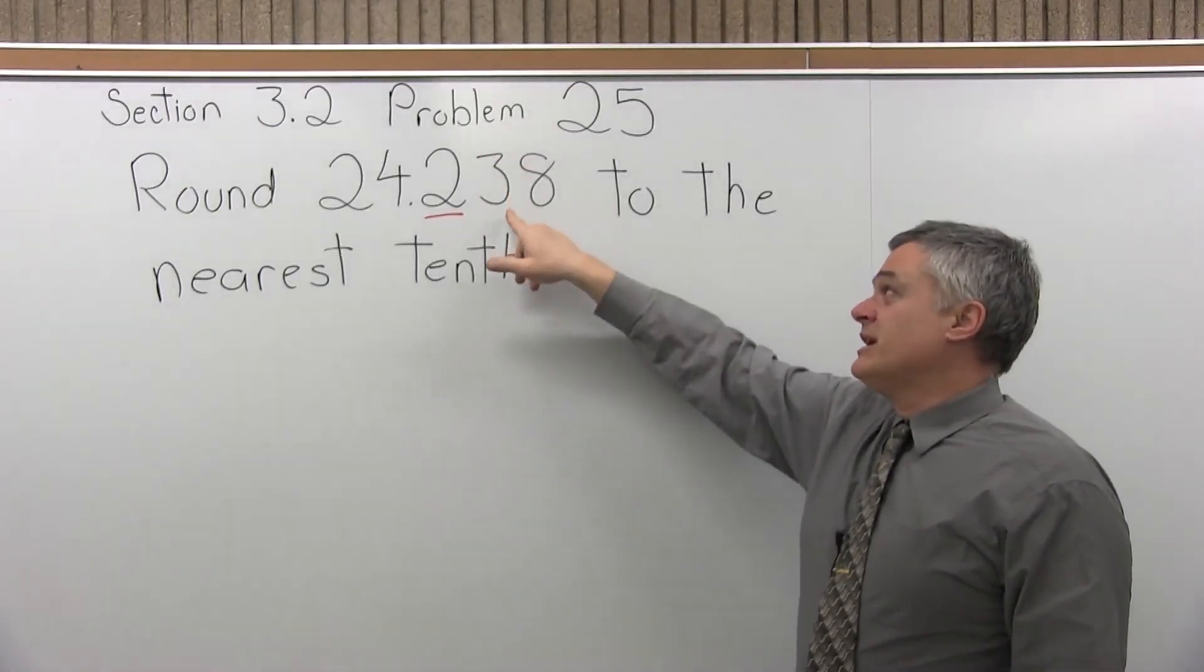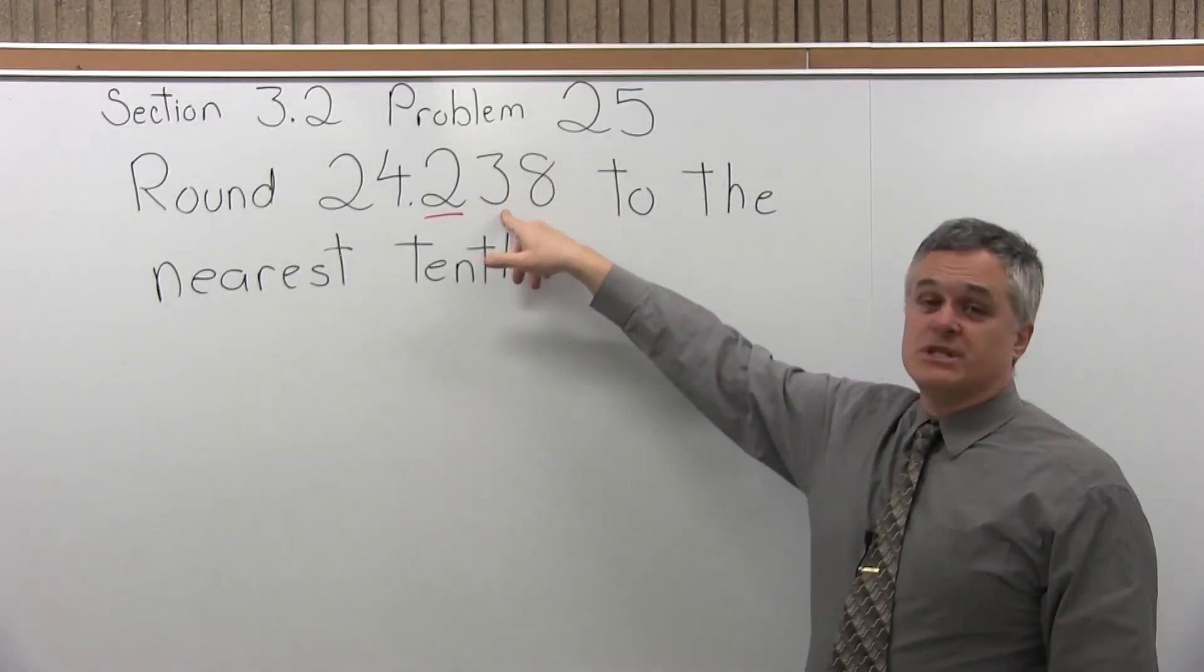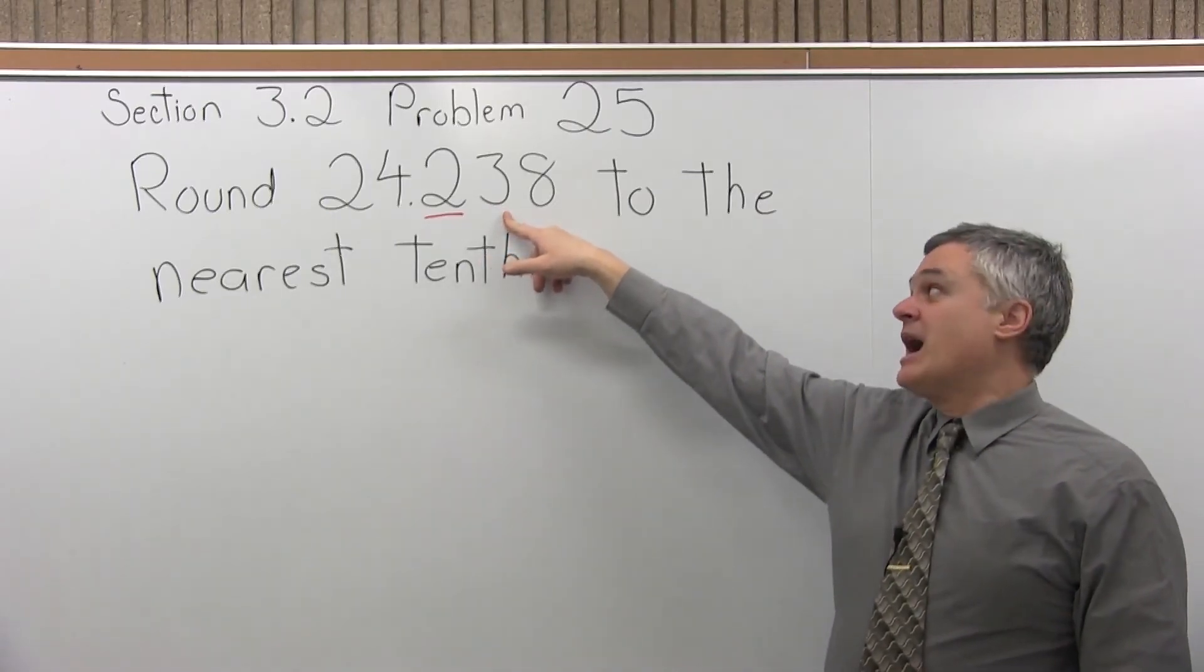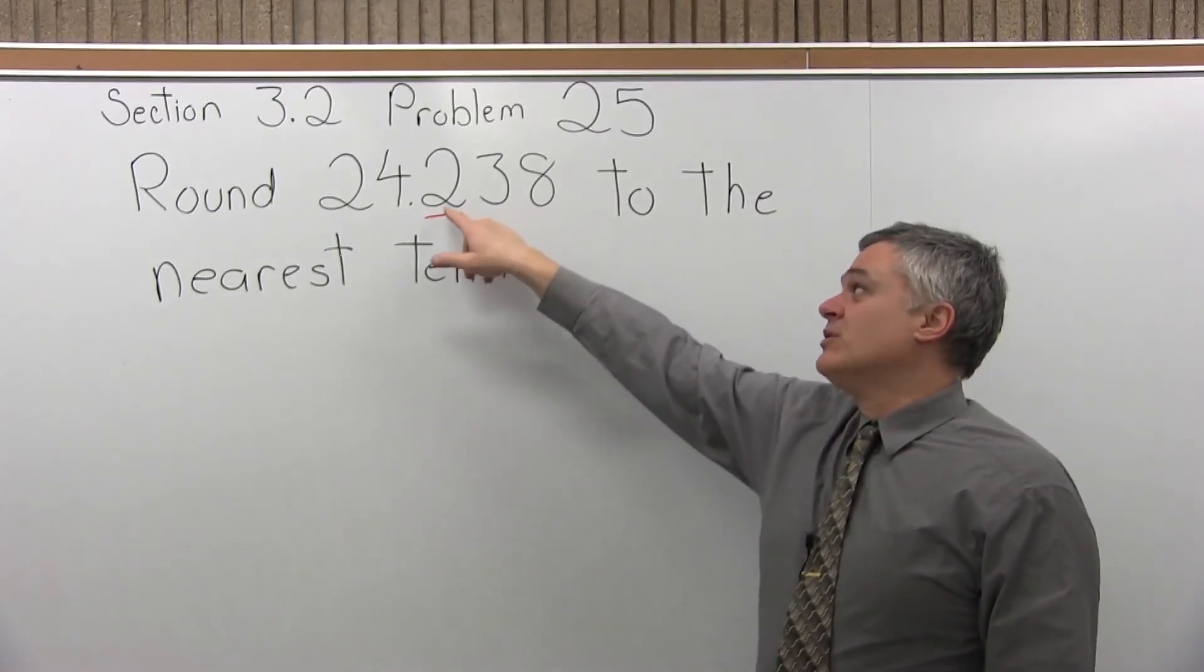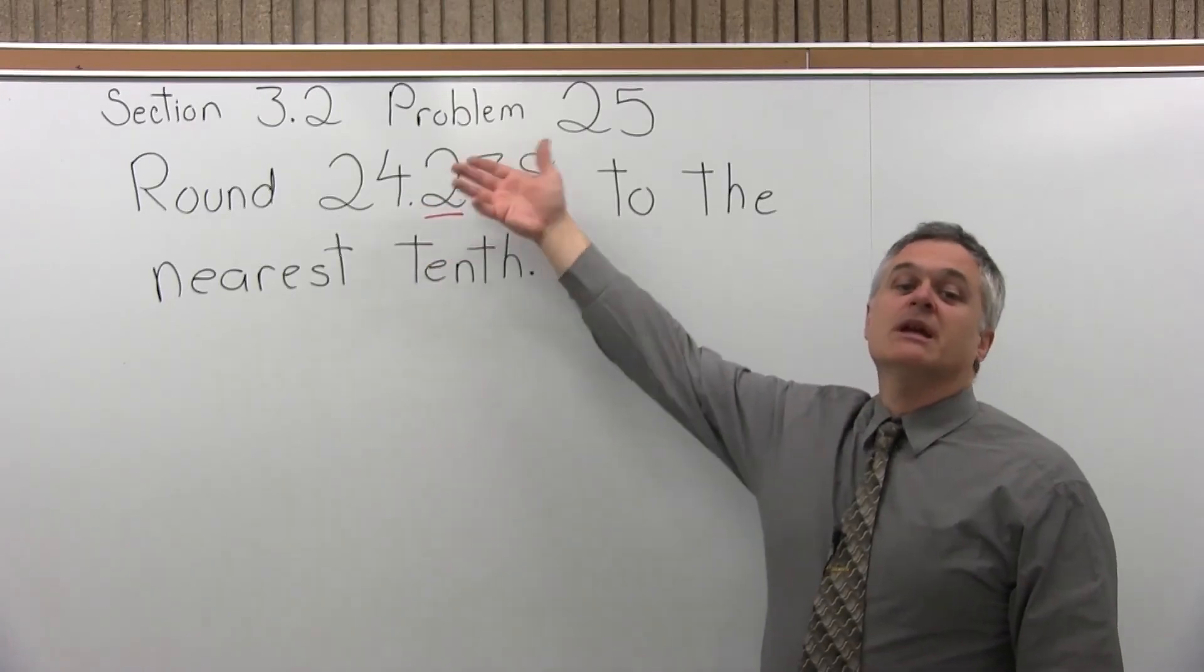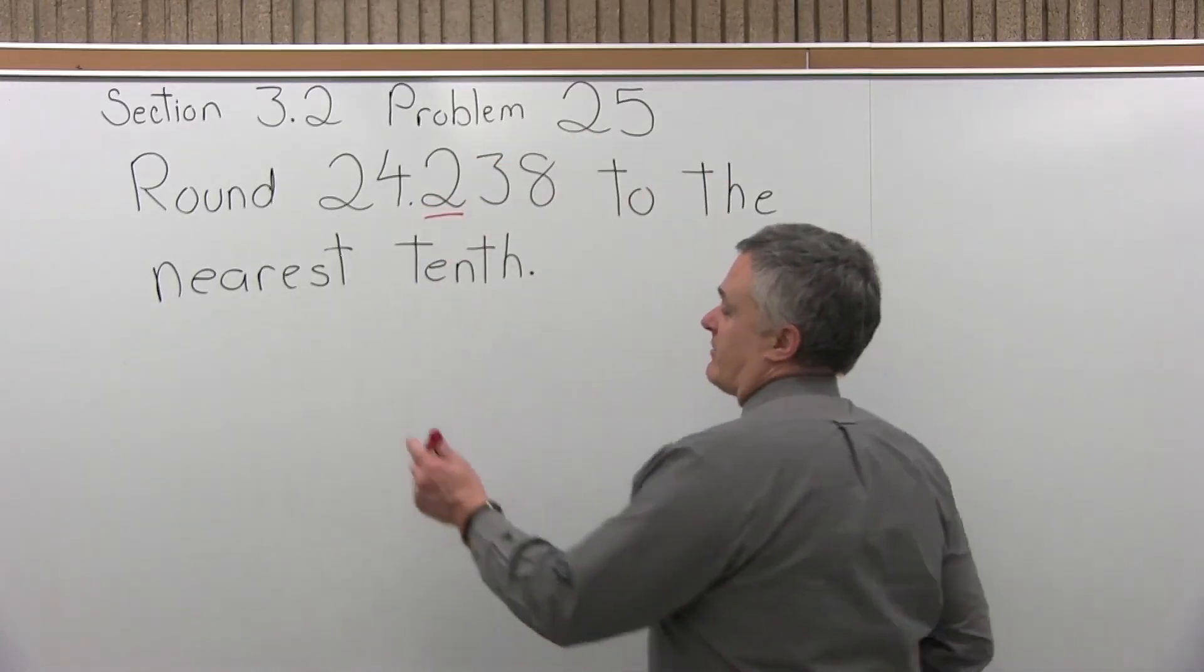Now if on the other hand the digit to the right of the rounding position were a 5, 6, 7, 8, or 9, 5 or more, then you would round this to a 24.3 and eliminate the other digits that come after.